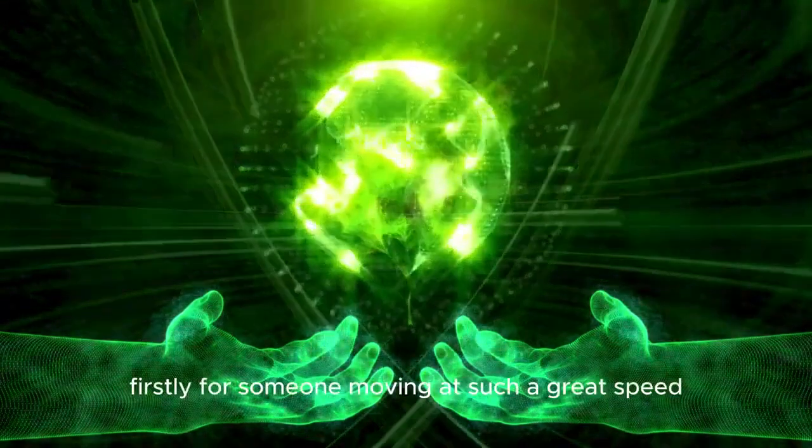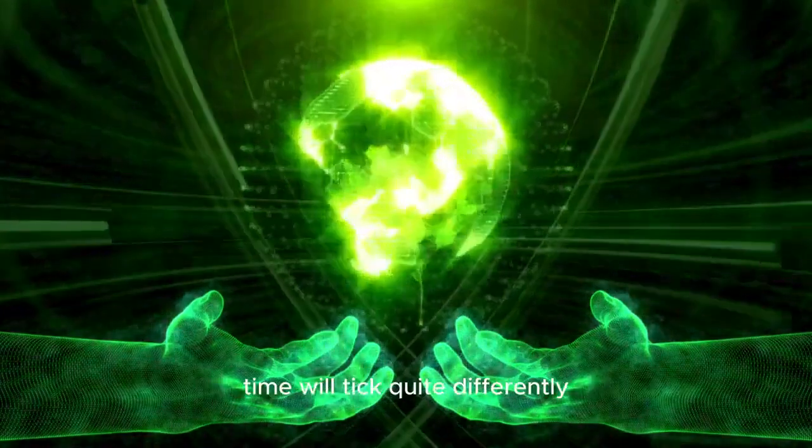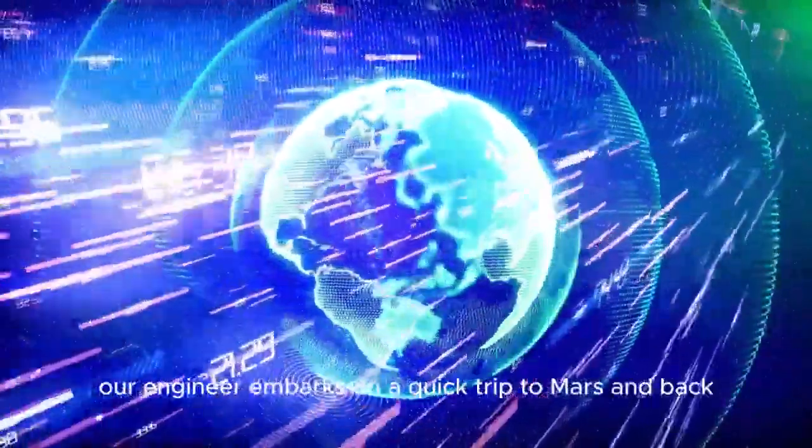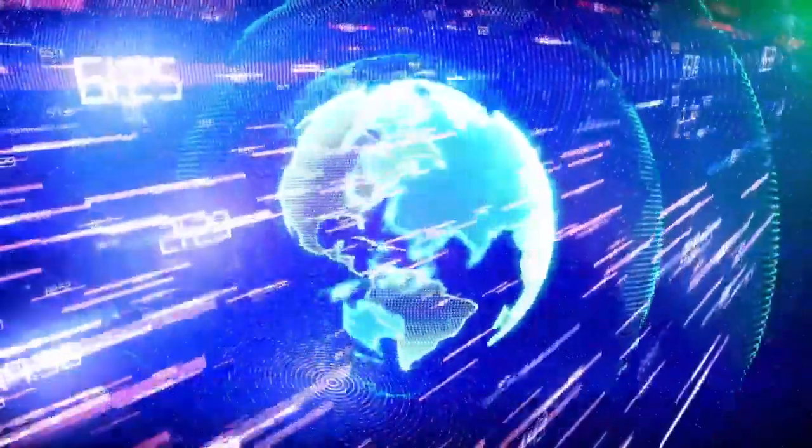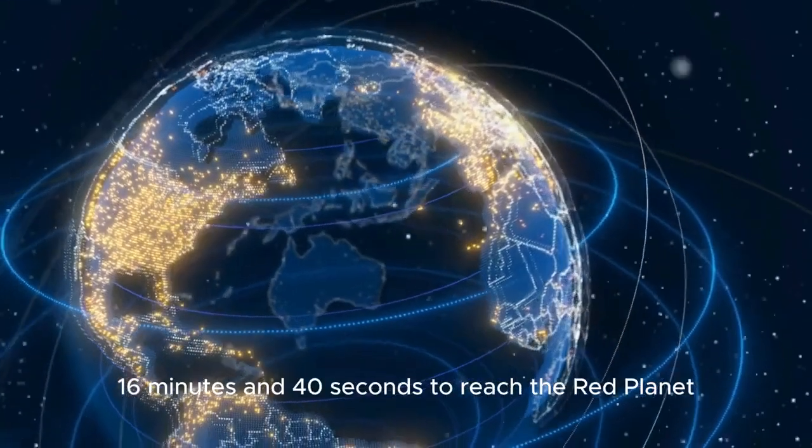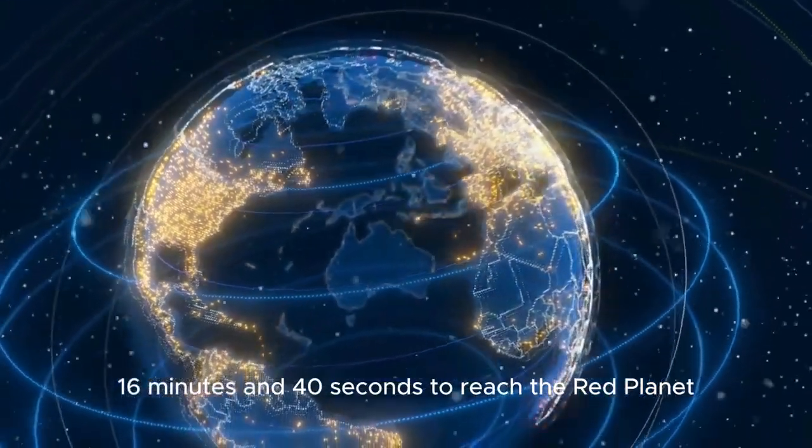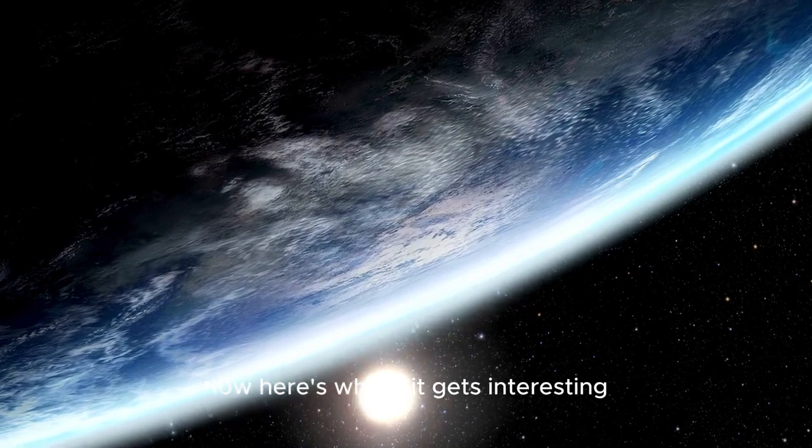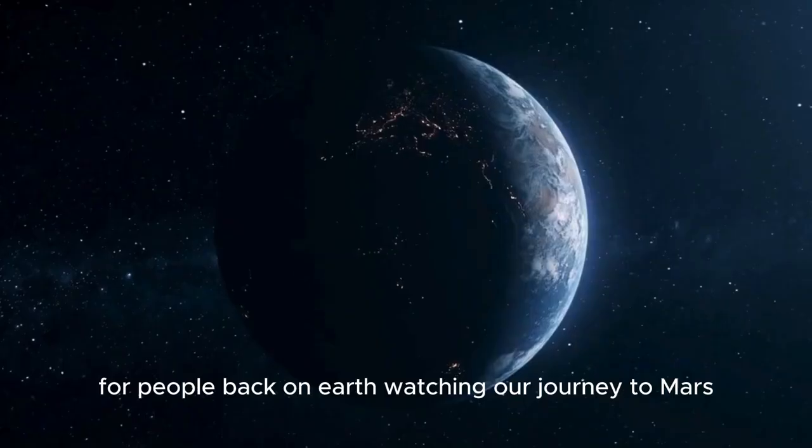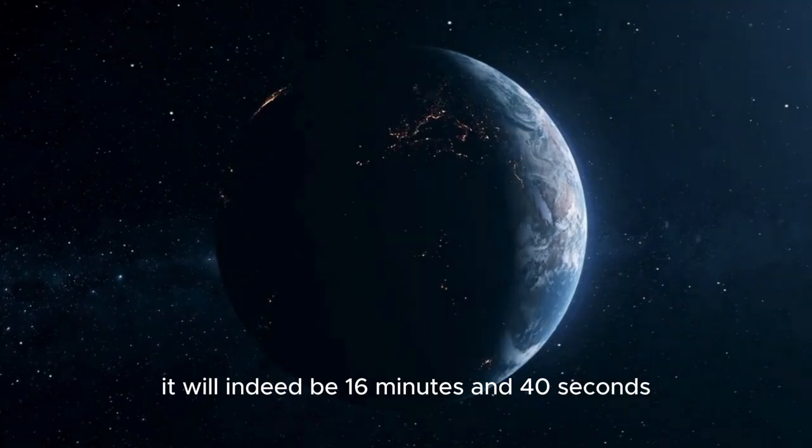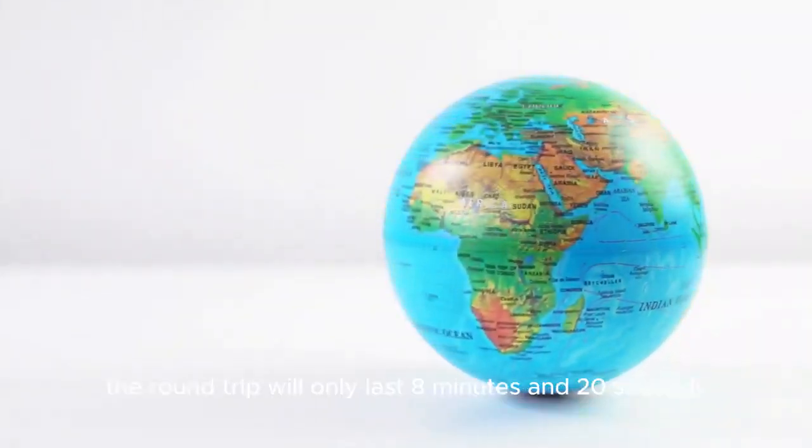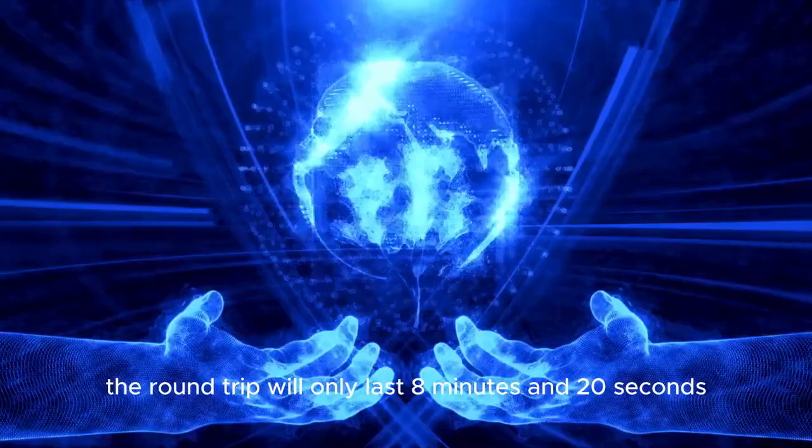Firstly, for someone moving at such a great speed, time will tick quite differently. Let's say our engineer embarks on a quick trip to Mars and back. It'll take them roughly 16 minutes and 40 seconds to reach the red planet and return to Earth. Now, here's where it gets interesting, for people back on Earth watching our journey to Mars, it will indeed be 16 minutes and 40 seconds, but for our engineer in the starship, the round trip will only last 8 minutes and 20 seconds.